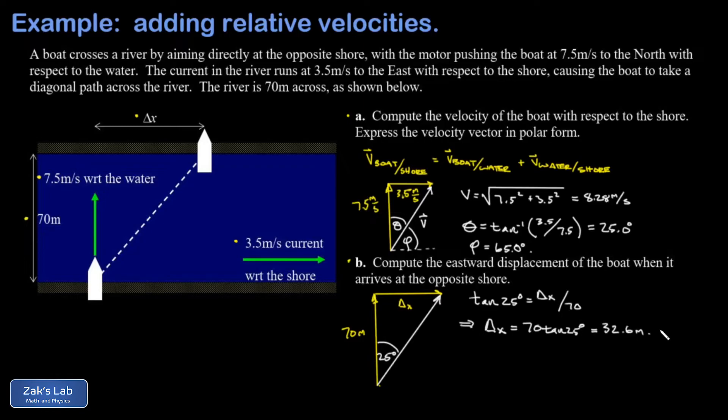Now there's another approach to part b and I think it's instructive to show this. If I really want to get into the nitty-gritty of the kinematics here, I can find the time for the boat to cross the river, and then I can use its eastward velocity, that 3.5 meter per second eastward current, to figure out what the eastward displacement is. So first to find the time to cross the river, I just have a simple relationship of distance equals rate times time.